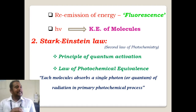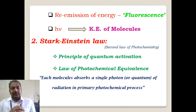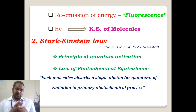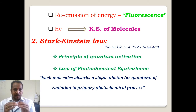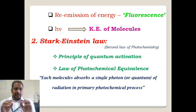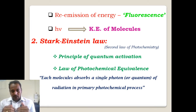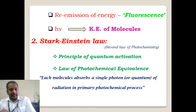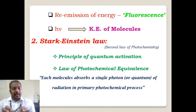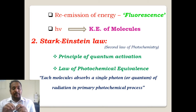Next, we move to the next fundamental of photochemistry — the Stark-Einstein Law, also called the second law of photochemistry. The Stark-Einstein Law is also called the principle of quantum activation, or the law of photochemical equivalence — because this law gives an equivalence between the absorbed light and the molecule that reacts. Stark and Einstein are two different scientists. According to Stark-Einstein Law, each molecule of a reacting system absorbs a single photon or quantum of radiation in a primary photochemical process.